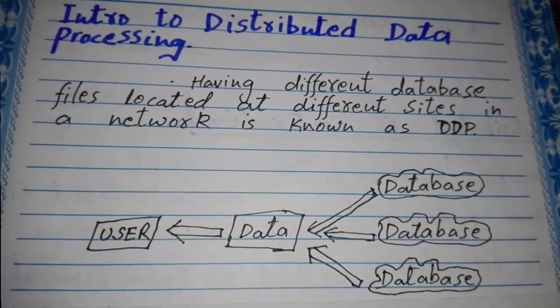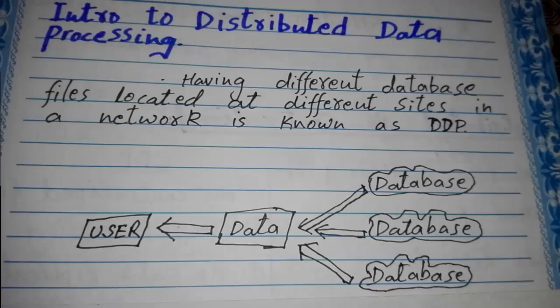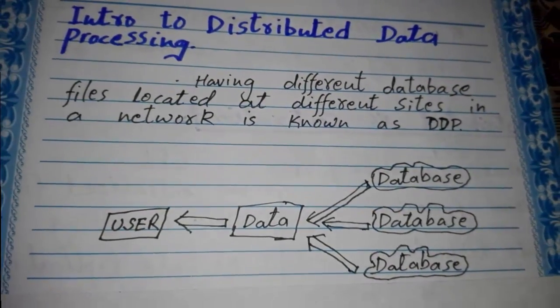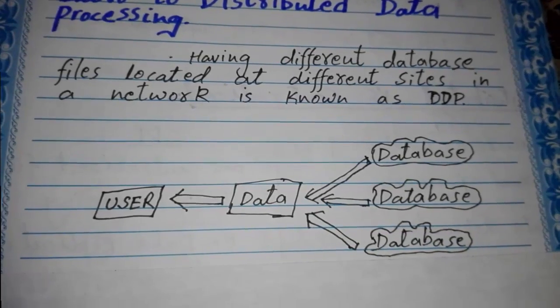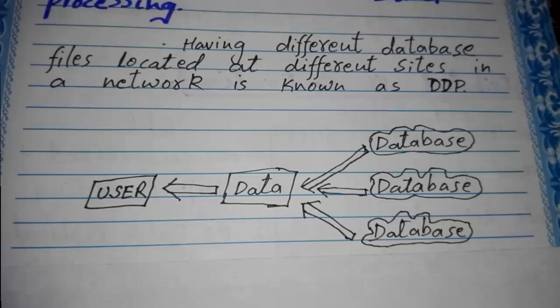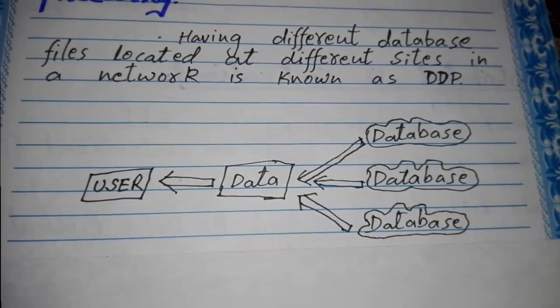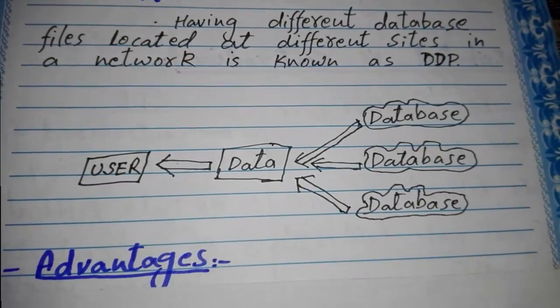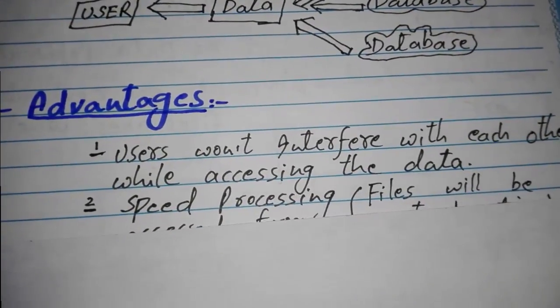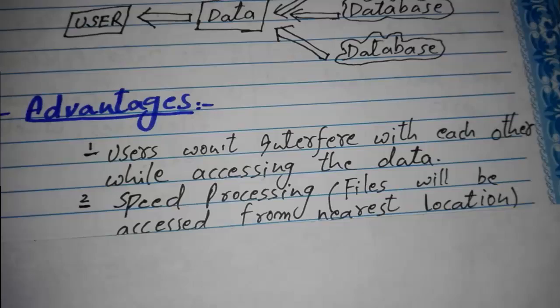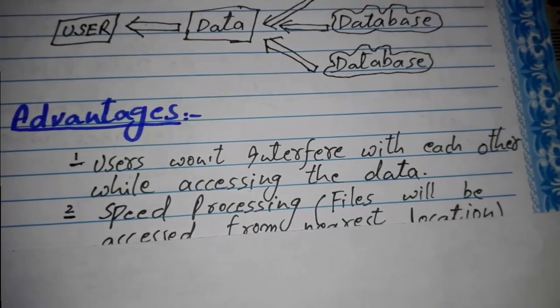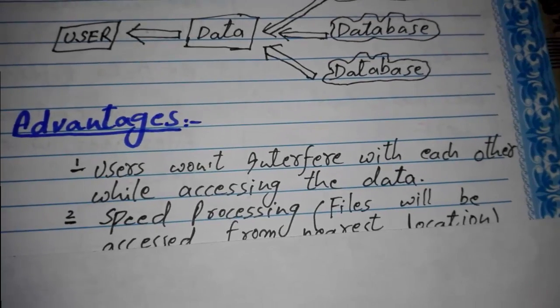So this comes in the category of distributed data processing. Next we have a couple of advantages and disadvantages of distributed data processing. First, I am going to look at advantages. The first advantage is users won't interfere with each other while accessing the data.